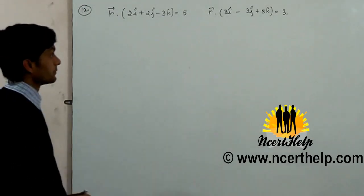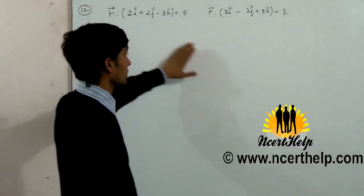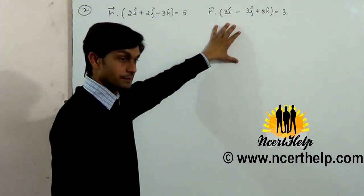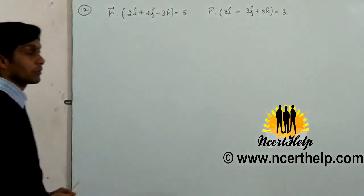Find the angle between two planes whose vector equations are given. So when plane is vector equation, angle between two planes - what is the formula?